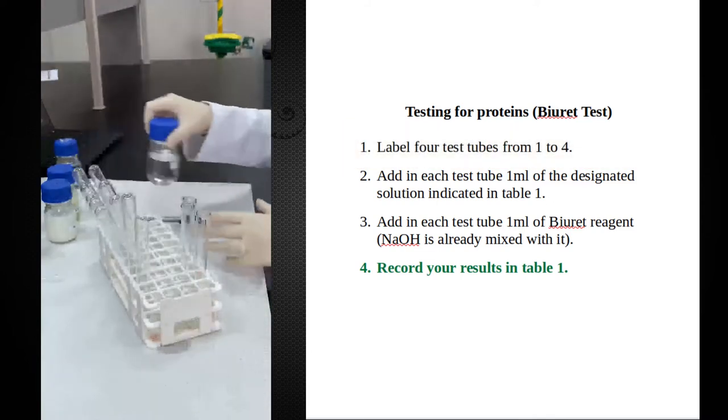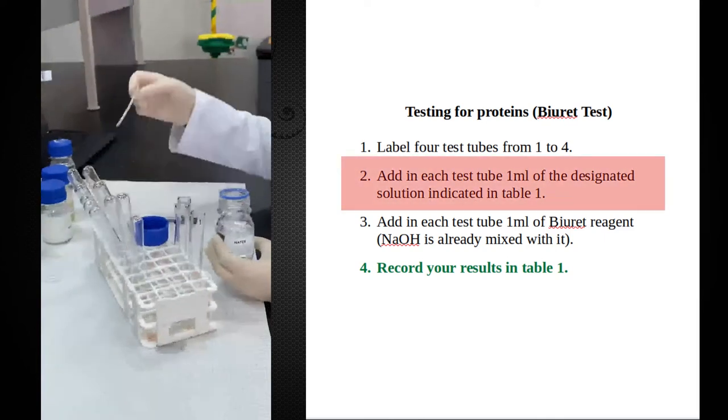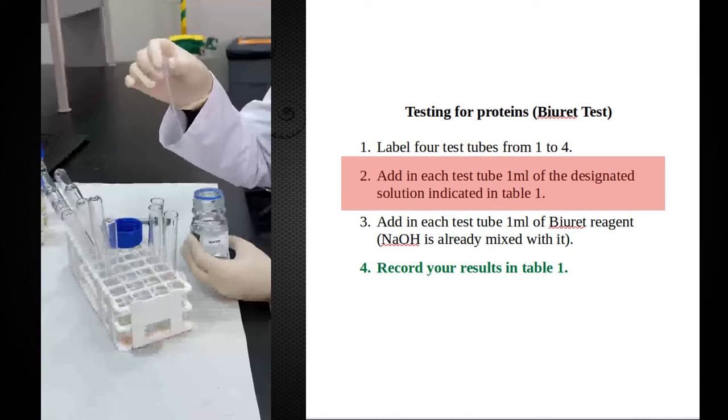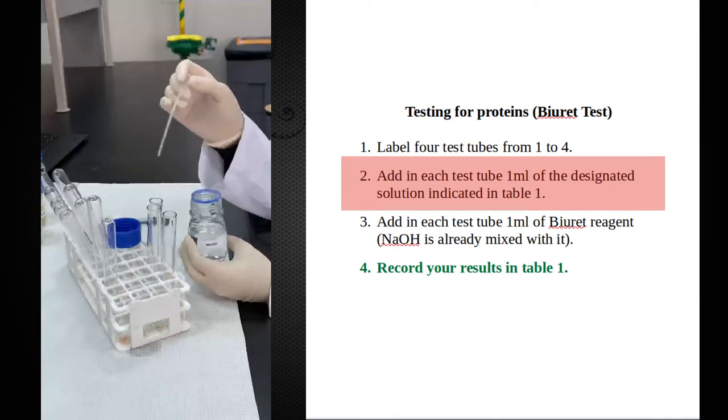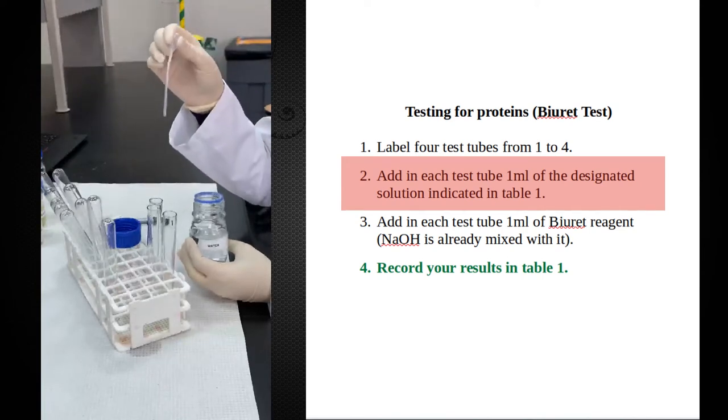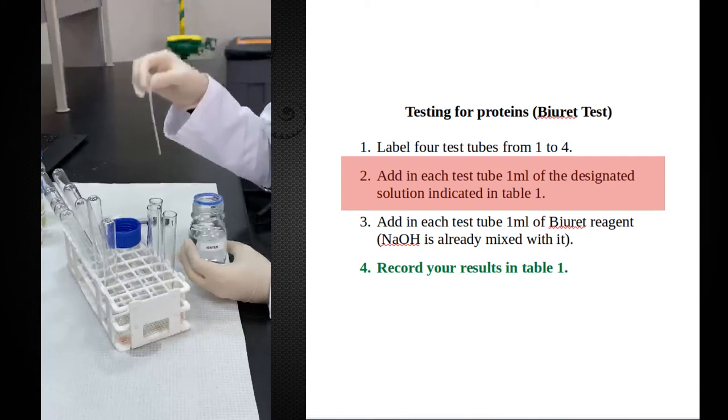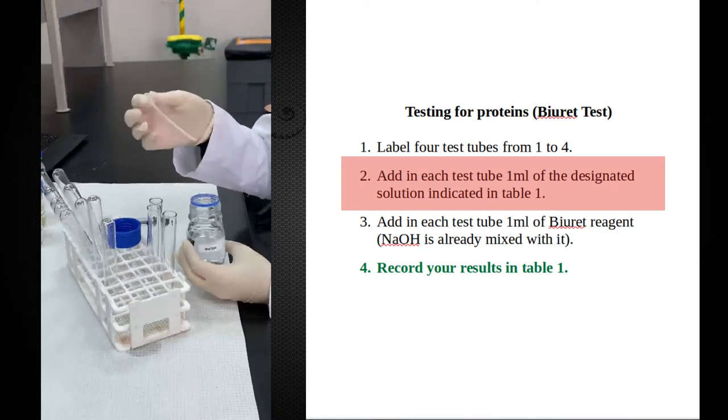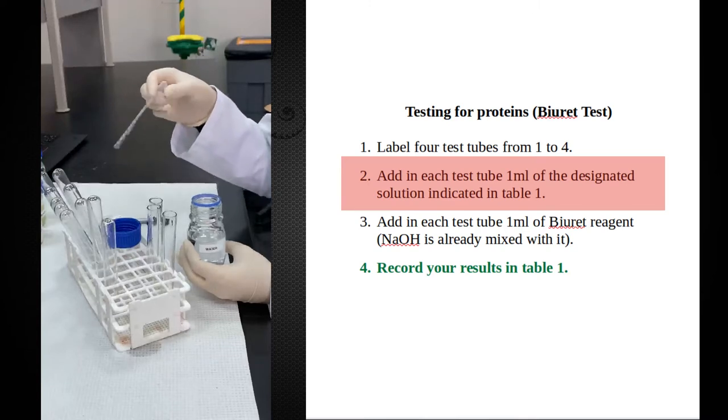In the first test tube, I will add 1 ml of distilled water, and this is my negative control. We are going to use dropper pipettes for this purpose. The most important thing is do not mix up dropper pipettes with each other. For each solution, there is one dropper pipette because we don't want cross-contamination. You cannot transfer one chemical from one place to another. The 1 ml is until the line of this dropper pipette. The amount doesn't have to be very specific, just approximately 1 ml.